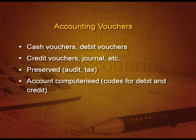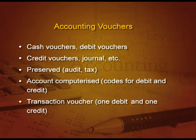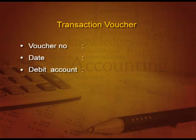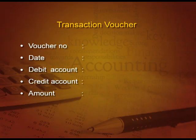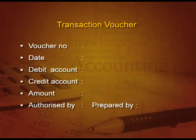Audit means checking of the accounts. As accounts are computerized these days, we allot codes for debit and credit. All the transaction vouchers which have one debit and one credit are the first type. We write the voucher number first, then the date, then the debit account and the amount, then the credit account and the amount in figures and words. There are two signatures: the person who authorized the voucher and the person who prepared it.